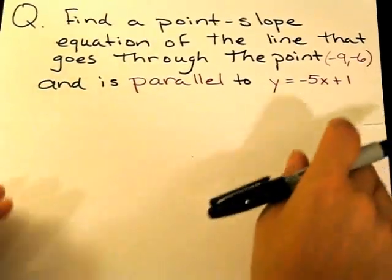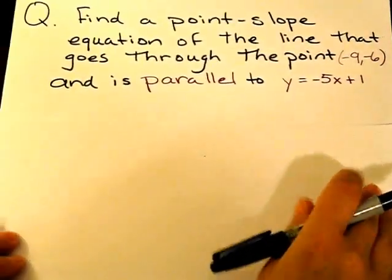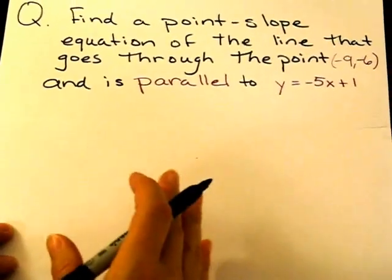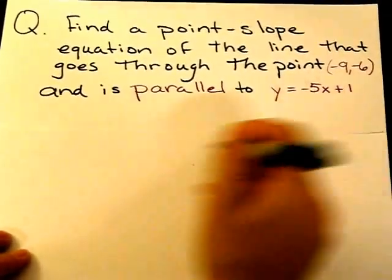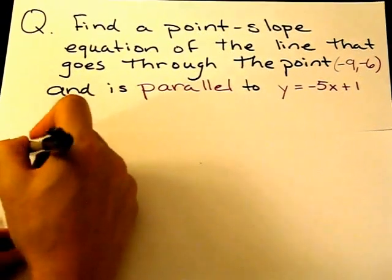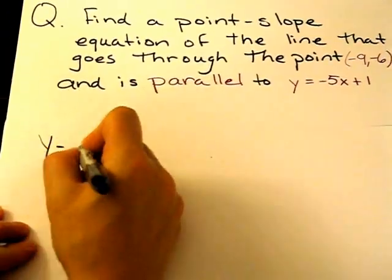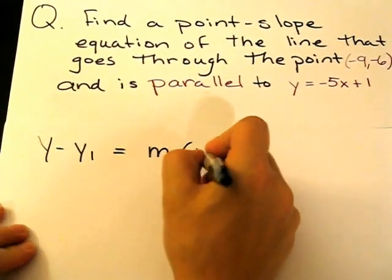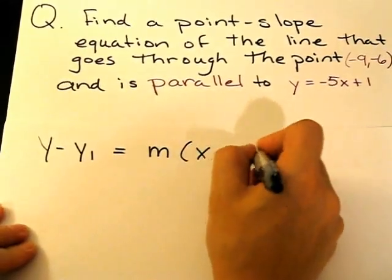First thing I'm going to do to find the solution to this problem is I'm going to write the point-slope form, which is just a general equation, and then I'm going to collect the information that I have. So point-slope form looks like this: y - y1 = m(x - x1).